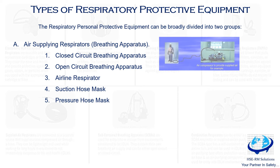The suction hose mask is a simple device containing a full face piece connected to a large-diameter flexible hose. The worker draws air by their own breathing effort. The hose is attached to the wearer's body by a safety harness, and the air inlet end is fitted with a filter to arrest particulate matter. Air can be drawn by respiratory effort through up to 30 feet to 9 meters of hose length.